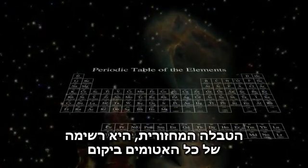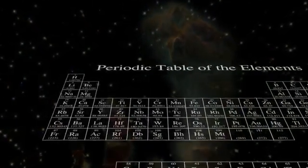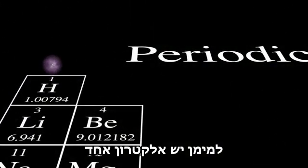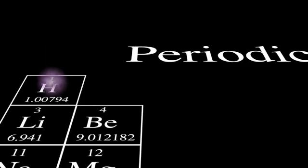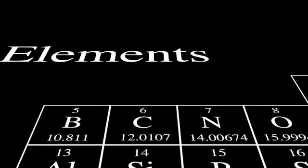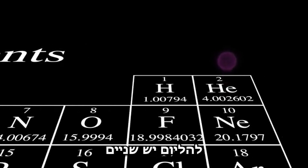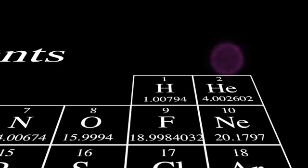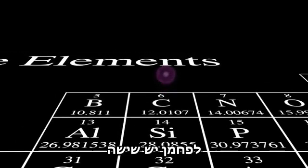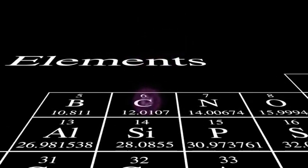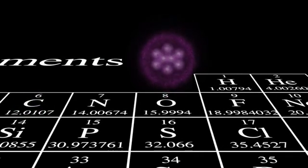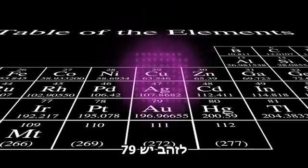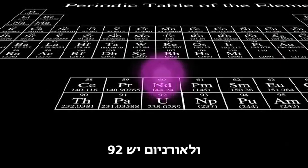The periodic table is a list of all the atoms in the universe that have different numbers of electrons. Hydrogen has one electron. Helium has two. Carbon has six. Oxygen, eight. Gold has seventy-nine. And uranium has ninety-two.